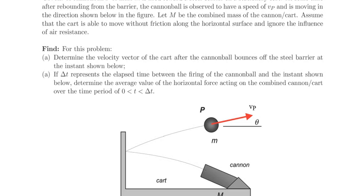With this information in hand, we're asked to determine the velocity vector of the cart after the cannonball bounces off the steel barrier at the instance shown below. And we're also asked to find, if delta t represents the elapsed time between the firing of the cannonball and the instance shown, the average value of the horizontal force acting on the combined cannon cart system over the period zero is less than t is less than the time delta t.